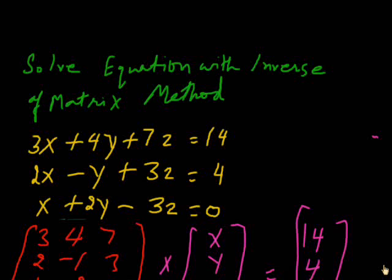Hello friends, this is a question to solve equations with the inverse matrix method. In this question, we are given the equations: 3x + 4y + 7z = 14, 2x - y + 3z = 4, and x + 2y - 3z = 0.